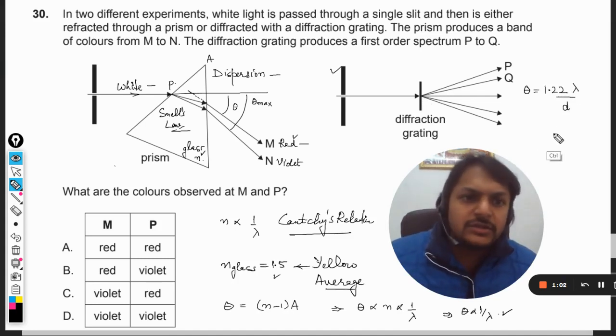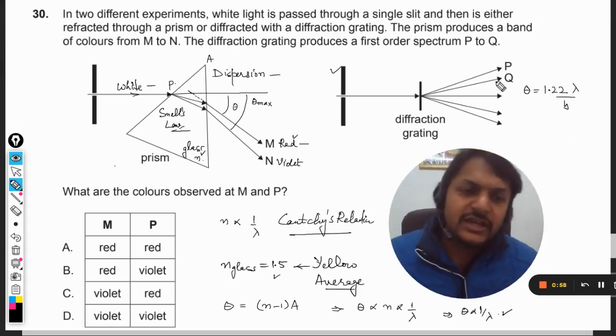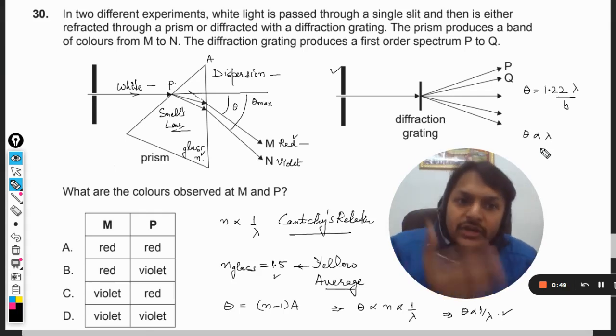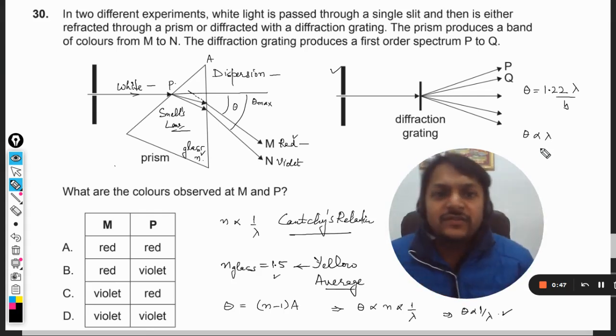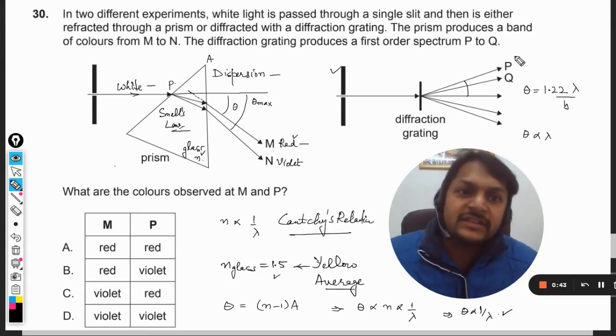In some books it is written as b, not as d, so do not get confused. The only thing that we need to note here is that angle is directly proportional to wavelength. It means more is the wavelength, more is the deviation. This angle will be bigger for bigger wavelength, hence P will be showing a red color and Q will be showing a violet color.